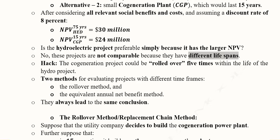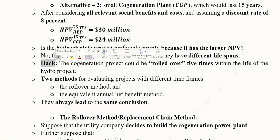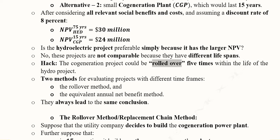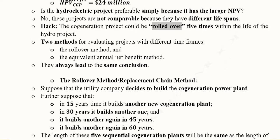A very intuitive approach is to roll over the smaller project a number of times to make it equivalent in length to the larger project. If we roll over the co-generation plant five times, it will become equal to the 75-year lifespan of the other project. We will use this intuition in the first of these two methods — the rollover method.